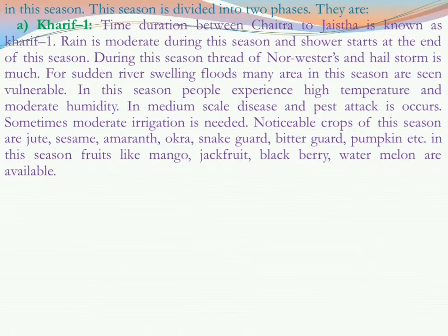In Kharif 1, rain is moderate and heavy rainfall starts only at the end of this season. Due to the hot weather, there is a threat of nor'westers and hailstorms. Sometimes there is sudden river swelling and floods in vulnerable areas. People experience high temperature and moderate humidity. Disease and pest attack occurs on a medium scale, and sometimes moderate irrigation is needed.